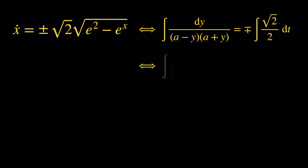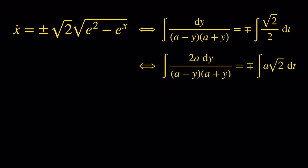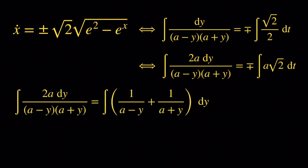We multiply both sides by 2a. We decompose the integrand of the first integral using partial fraction decomposition. The partial fraction decomposition gives us 1 over (a minus y) plus 1 over (a plus y). Integrating that, we get the natural log of (a plus y) over (a minus y), noting that y is between negative a and a.